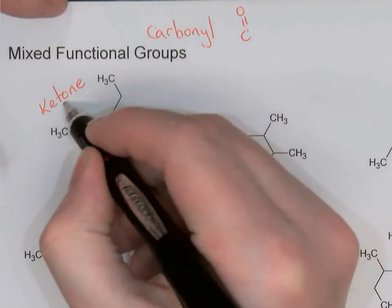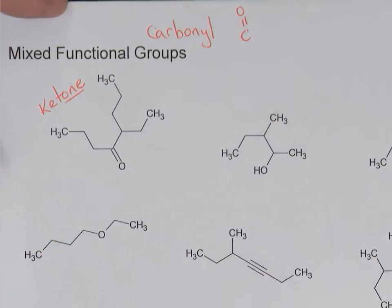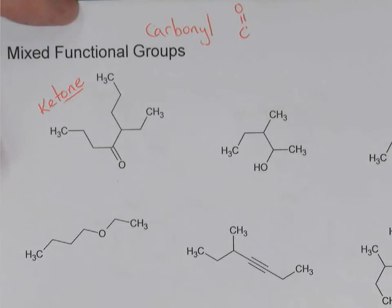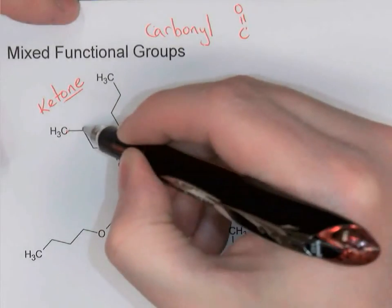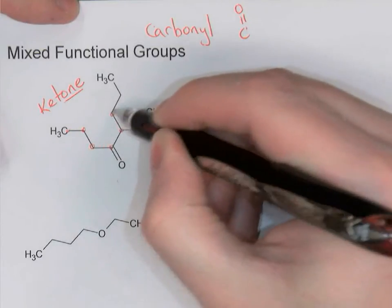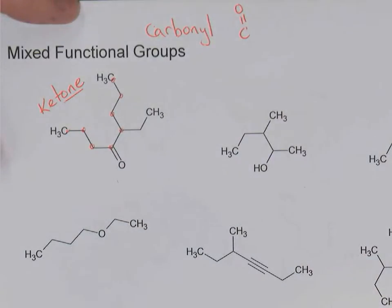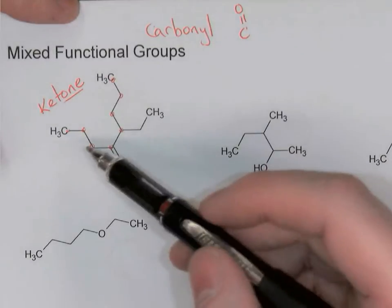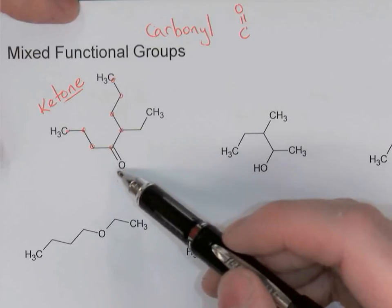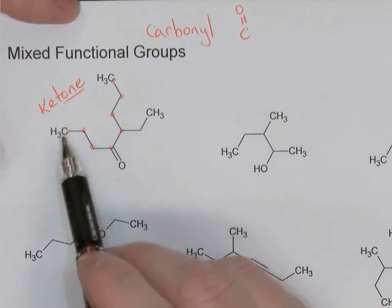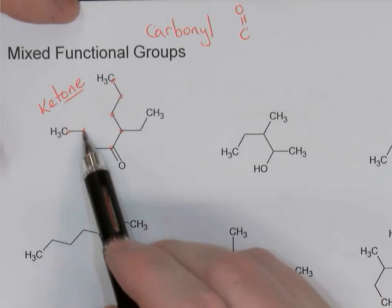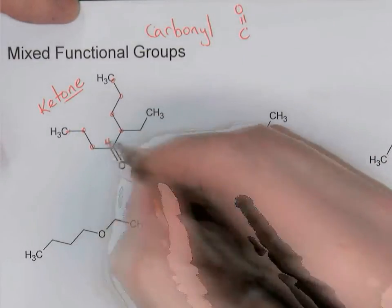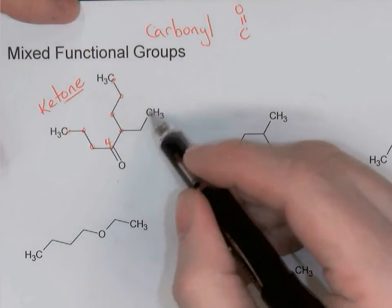Now that I know it's a ketone, the molecule's name is going to end in ONE. Let's first find the parent chain, which will be the longest continuous chain of carbons that includes the functional group. Counting here: one, two, three, four, five, six, seven, eight — so eight carbons is the parent chain. When we number, we want to number from the end closest to a functional group, so in this eight-carbon chain I'll number from the left. The carbonyl is at carbon number four.